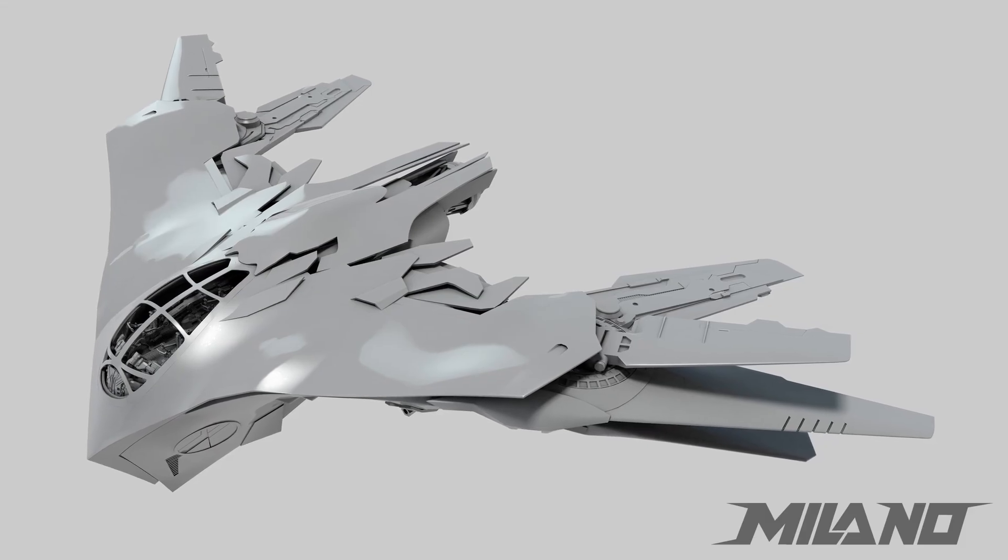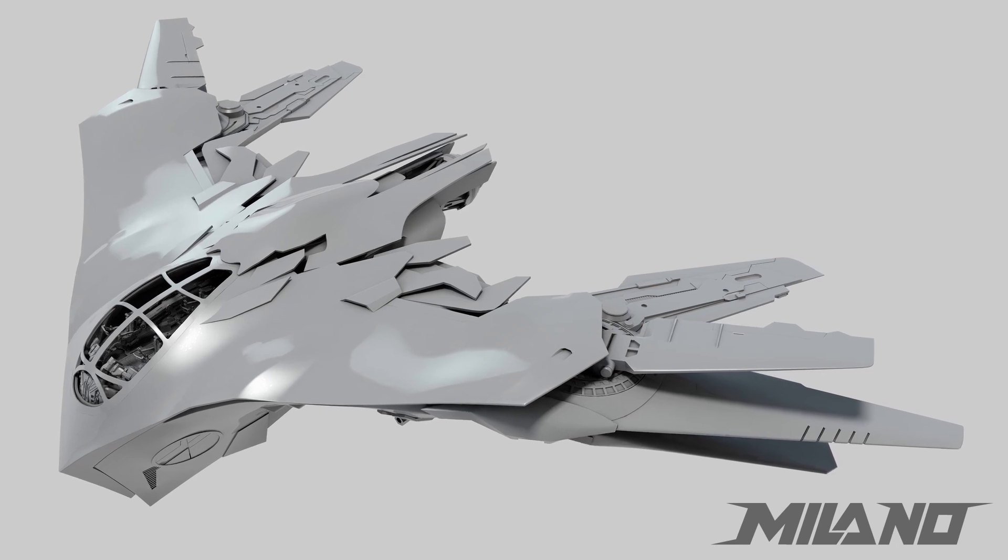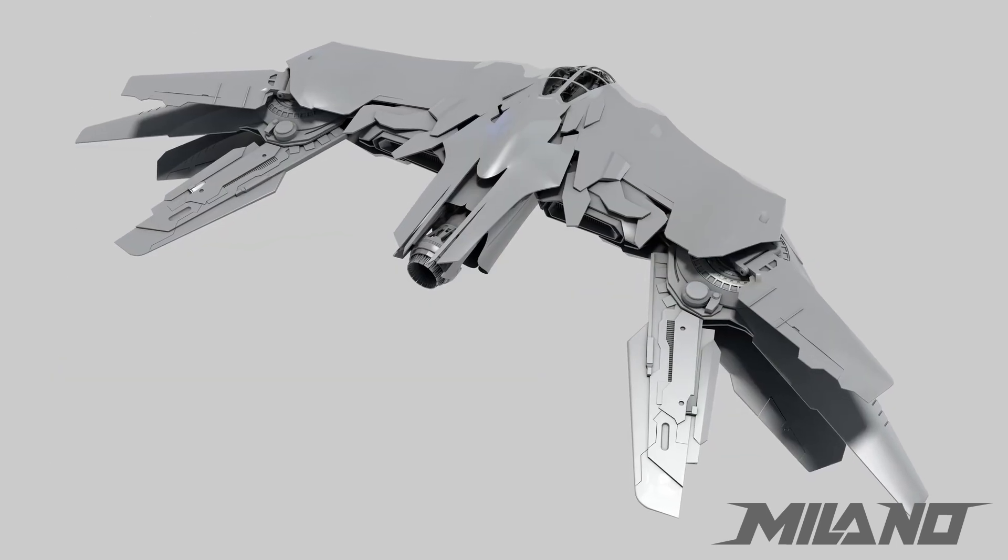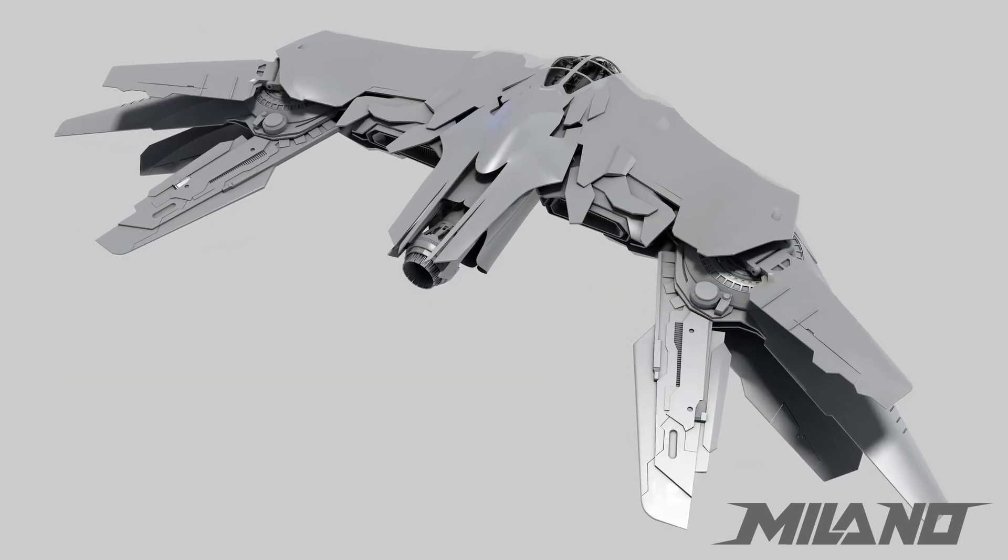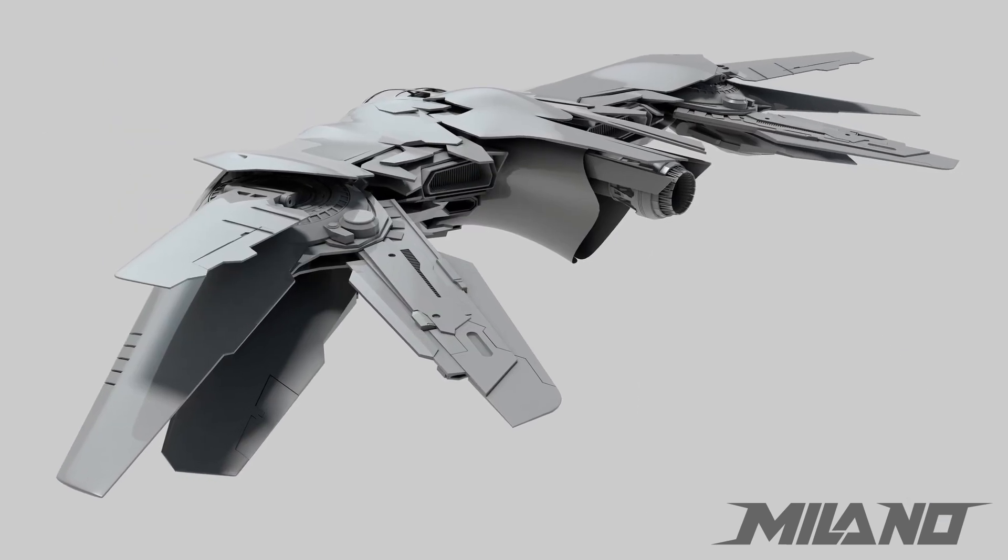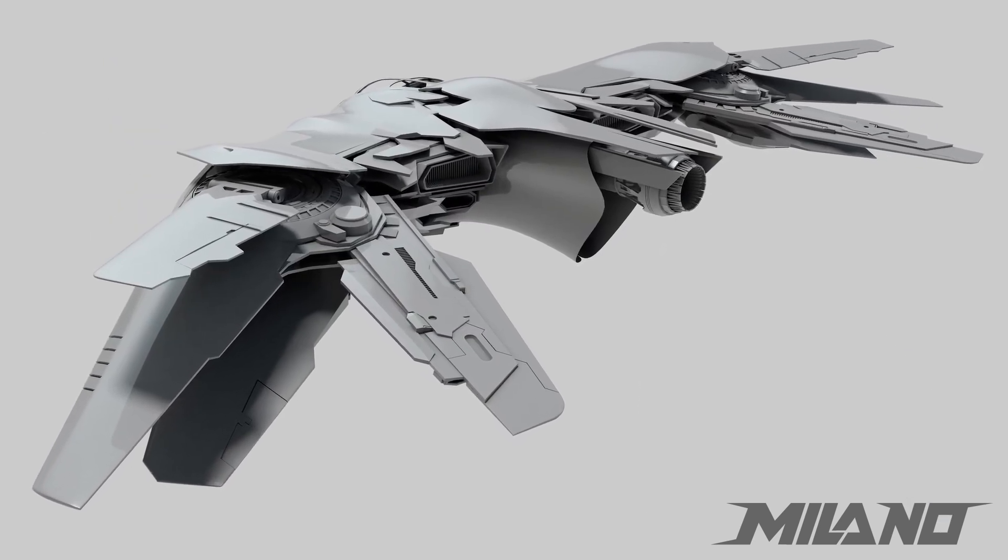In the next episode I'll tackle the back section of the main hull with the variable thrusters and main engine. Then we should have all the main sections of Milano basically designed before I go around adding detail and preparing for final printing.